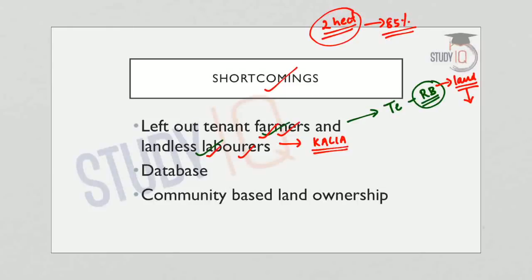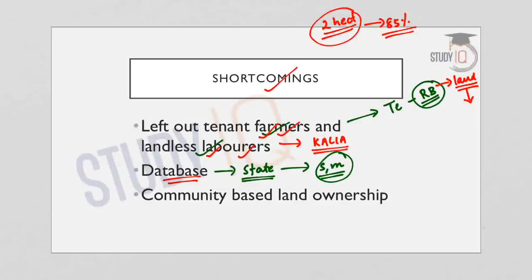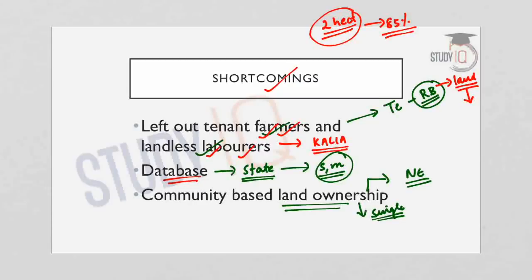In contrast, Odisha's KALIA scheme has separate features for landless laborers and tenant farmers. So the central government has excluded the most vulnerable categories. The second shortcoming concerns the database: many states do not maintain a proper database of land records, and collecting all the data within a short period of time would be difficult. There are also associated concerns at the operational level such as land record reconciliation, digitization, and consolidation costs. In certain northeastern states, land ownership is community-based, making it difficult to identify individual beneficiaries.